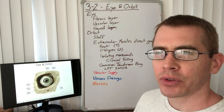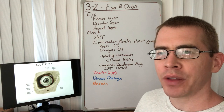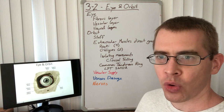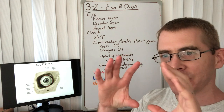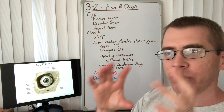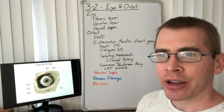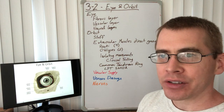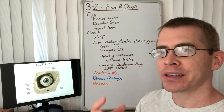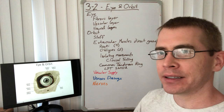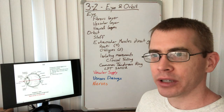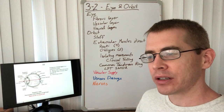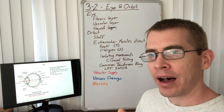Welcome to lecture 3-2 on the eye and the orbit. The orbit is the cavity in the skull in which the eye resides, so the eye is one of the contents of the orbit. Now let's talk about the eye.